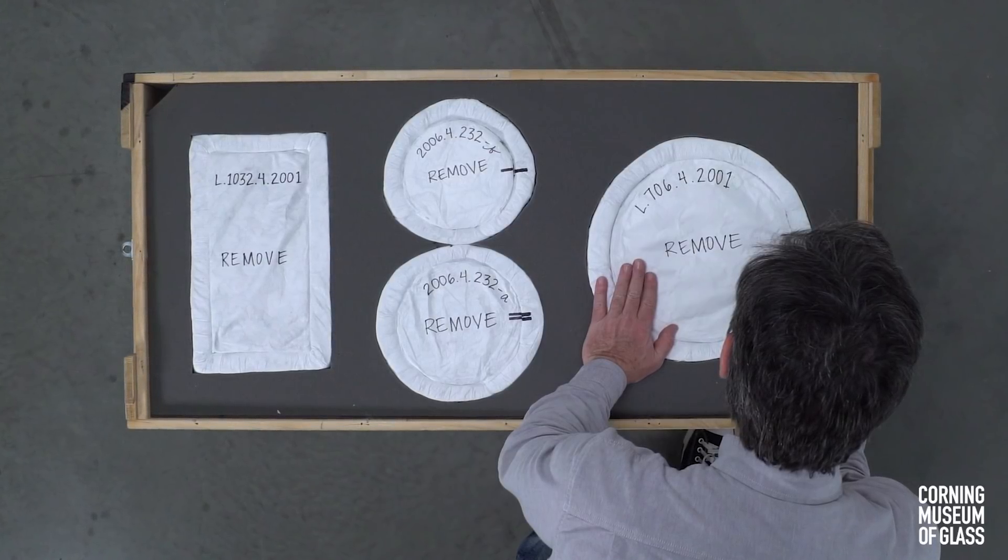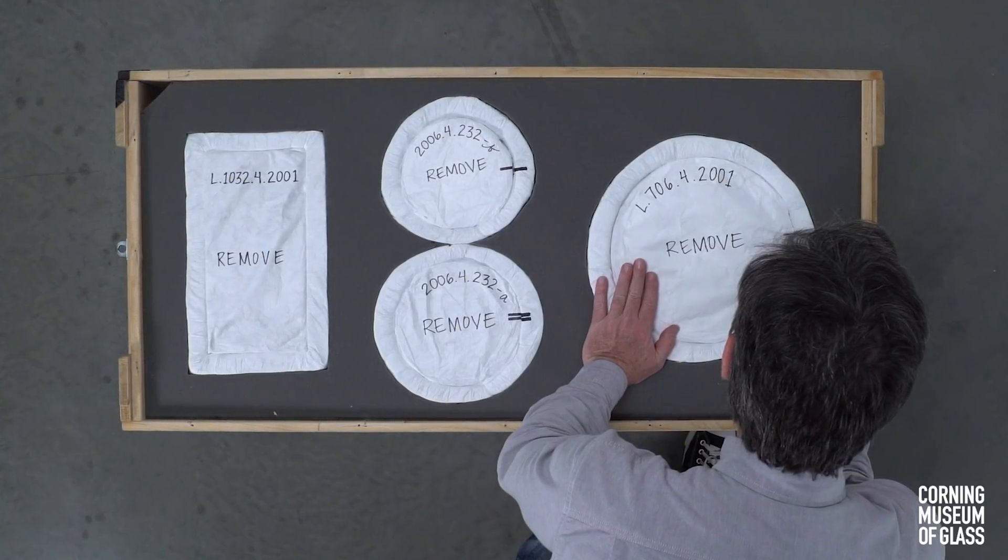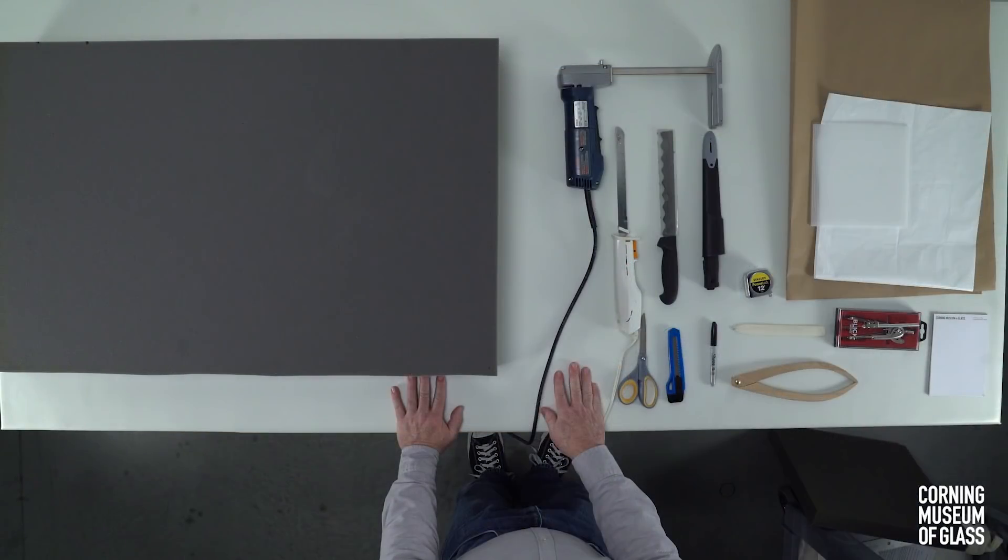For the purposes of this video, we will repurpose an existing crate and have omitted the crate construction process. Here are some tools and materials used for cavity packing objects.